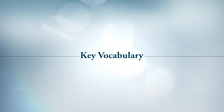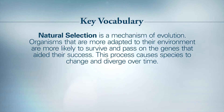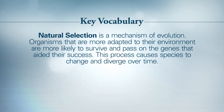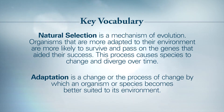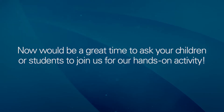Before we begin our activity, let's review some key vocabulary. The big idea for this lesson involves natural selection and adaptations. Natural selection is a mechanism of evolution — organisms that are more adapted to their environment are more likely to survive and pass on the genes that aided their success. This process causes species to change and diverge over time. Adaptation is a change or process of change by which an organism or species becomes better suited to its environment.